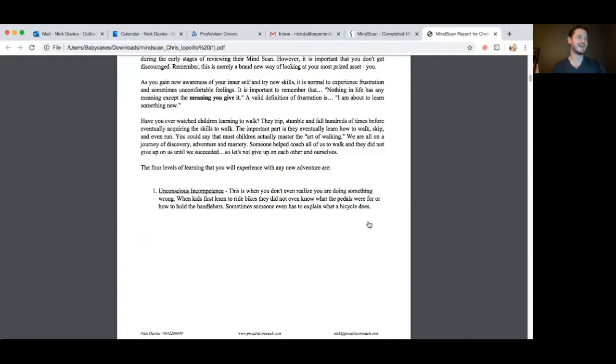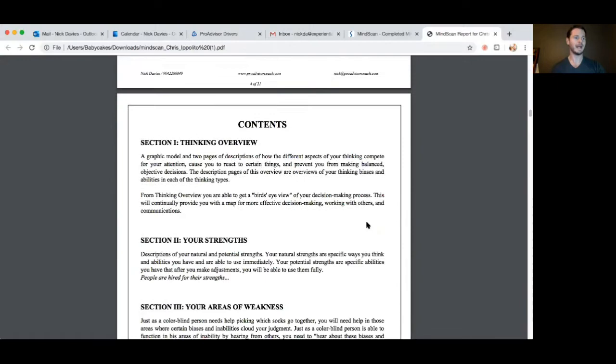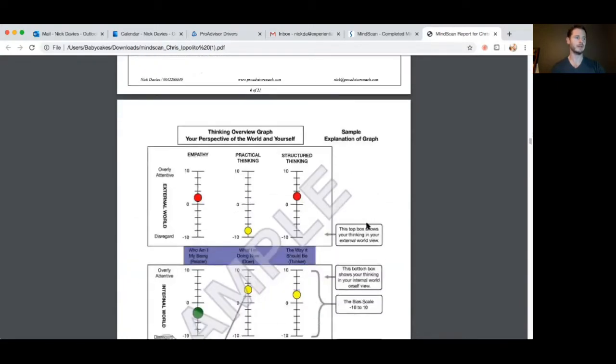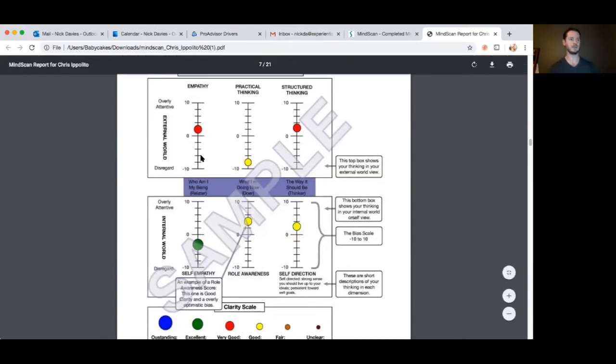Just to kind of go over what the actual MindScan looks like as a table. So this is a sample, this isn't yours just yet, but I mentioned already that there's three different dimensions. So there's the relator, the doer, and thinker. And those are across two different worlds. So we have the external world up top here and then to the internal world down here. Three different dimensions over two different worlds gives us six different areas to look at.